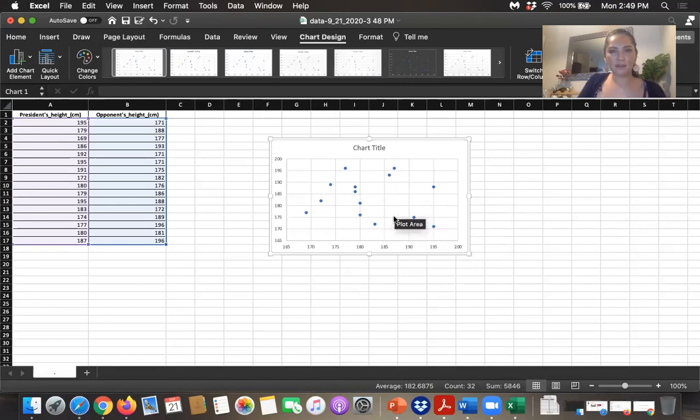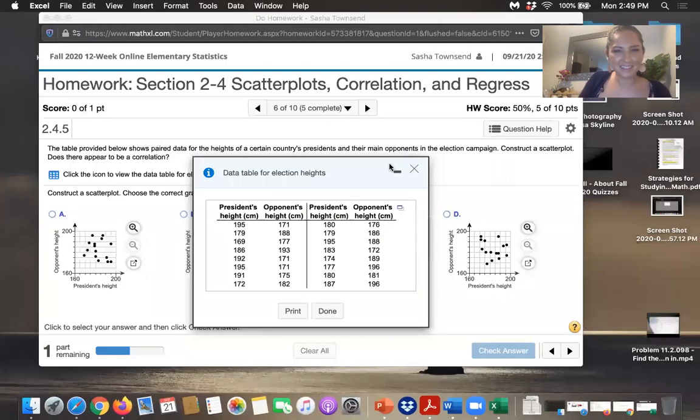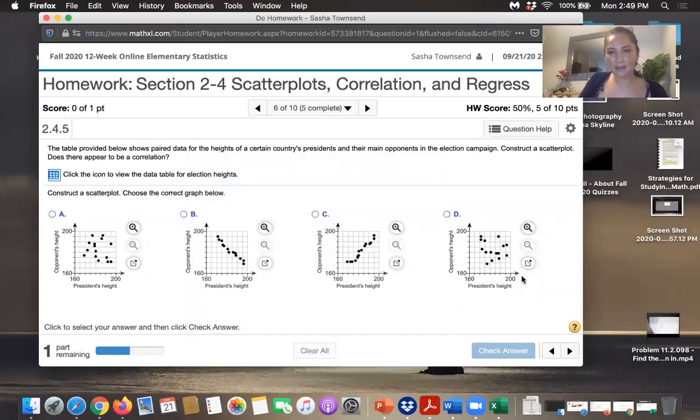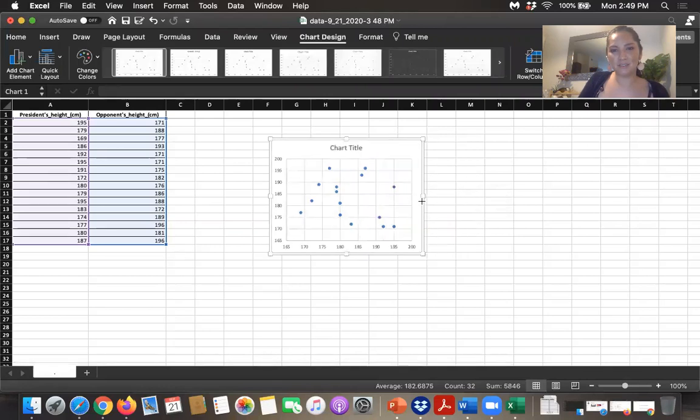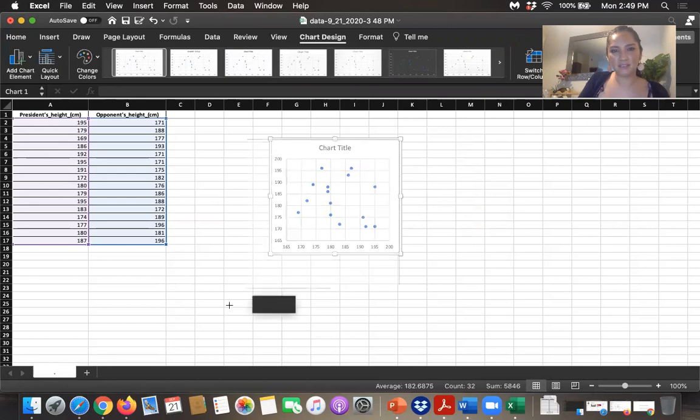Now I'm going to compare the graph that I've just created using Excel to the graphs that are available in the MyLab Statistics homework page. Okay. So they have their graph as very square. So I'm going to go back to Excel now and I'm going to make it square just by changing the dimensions of this graph here.